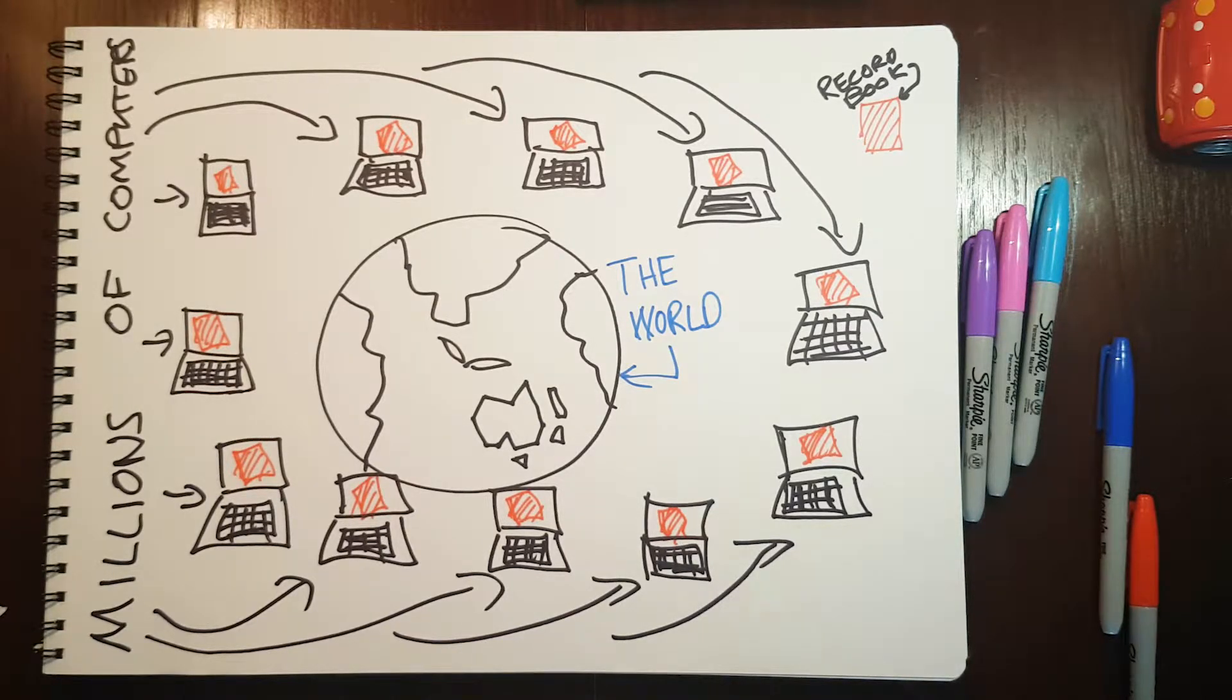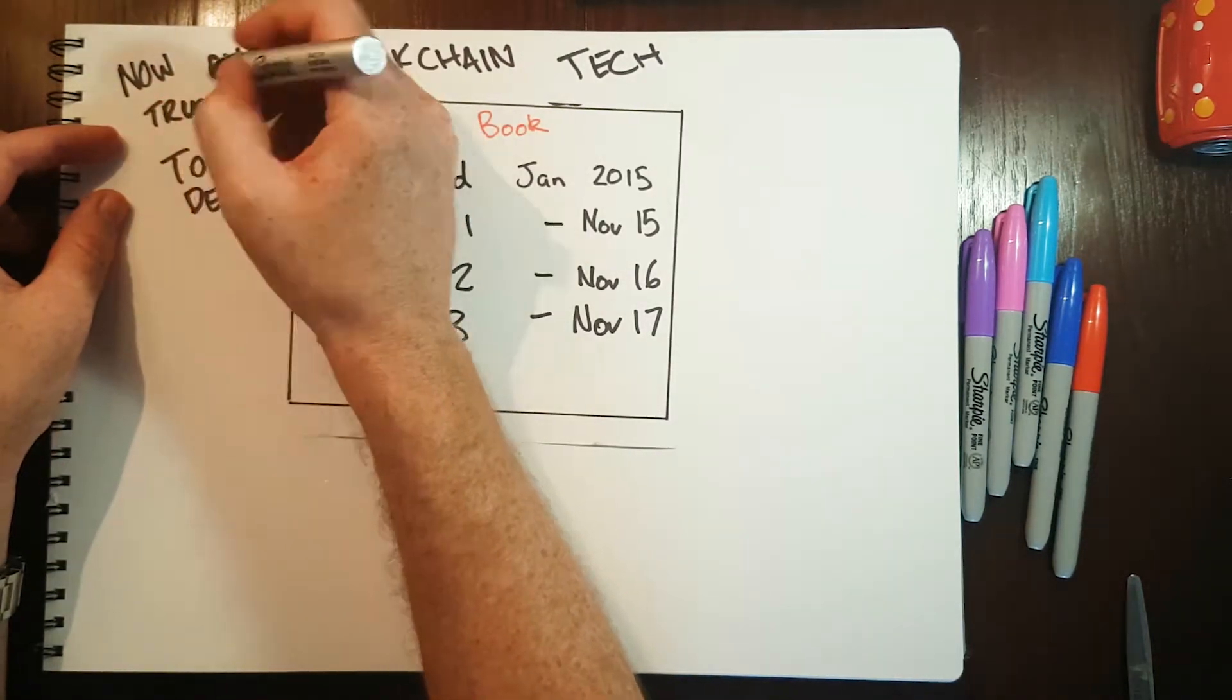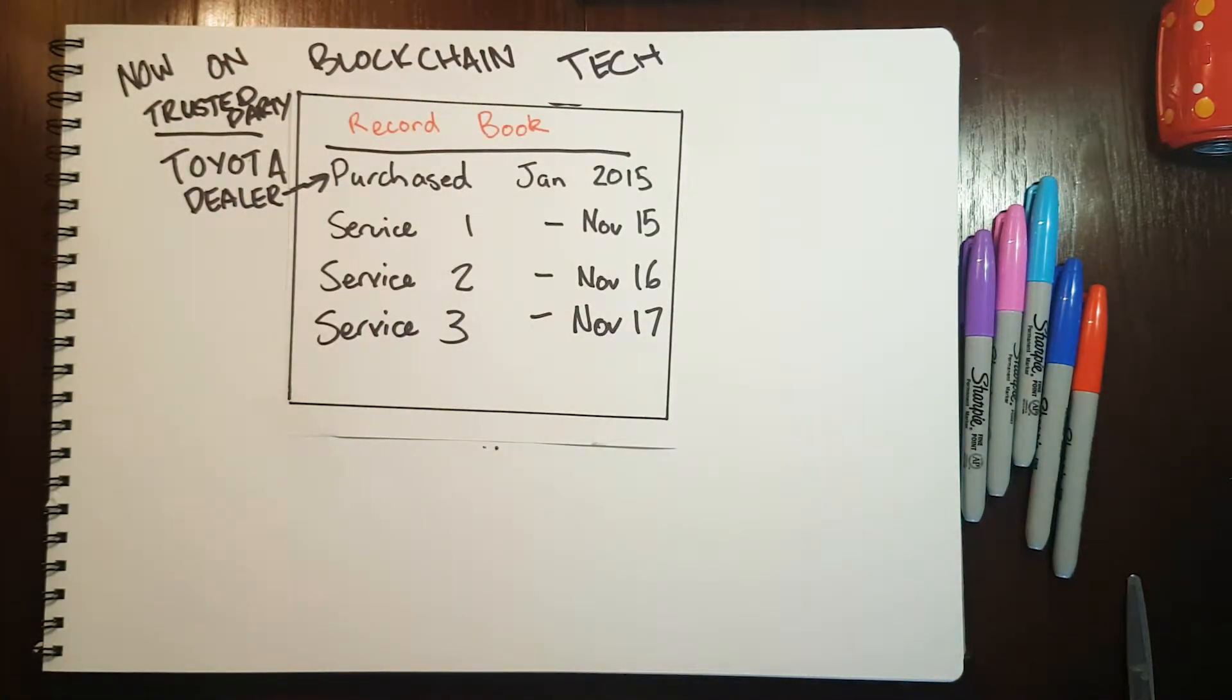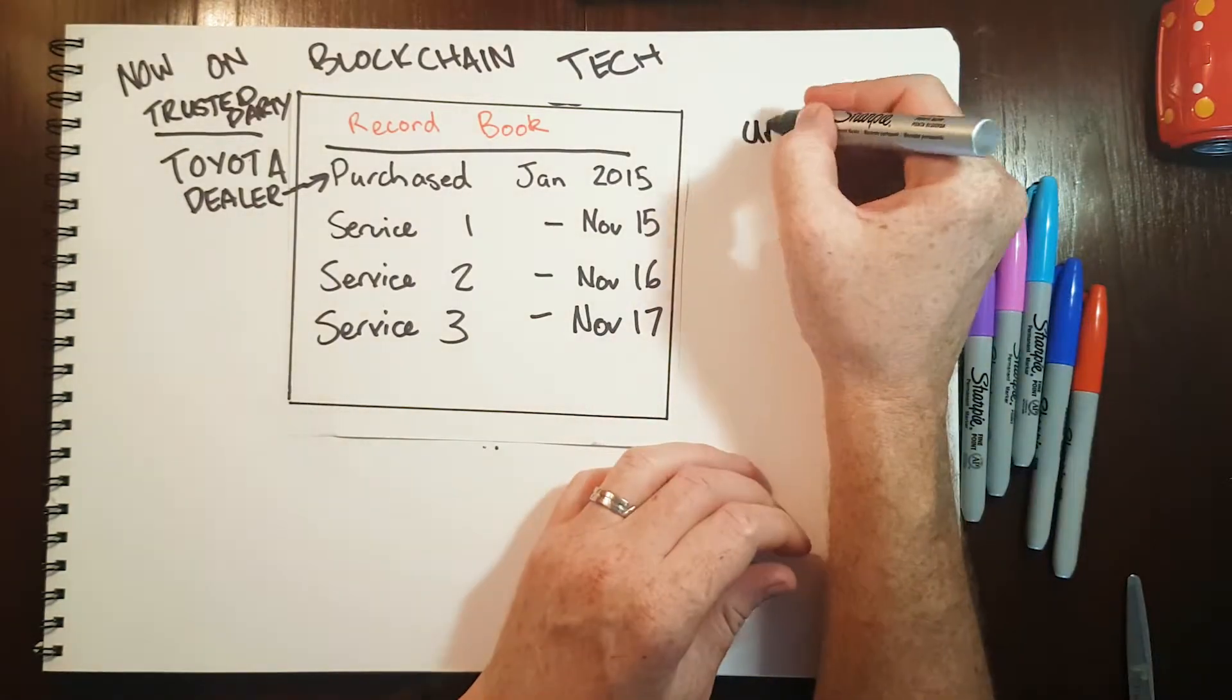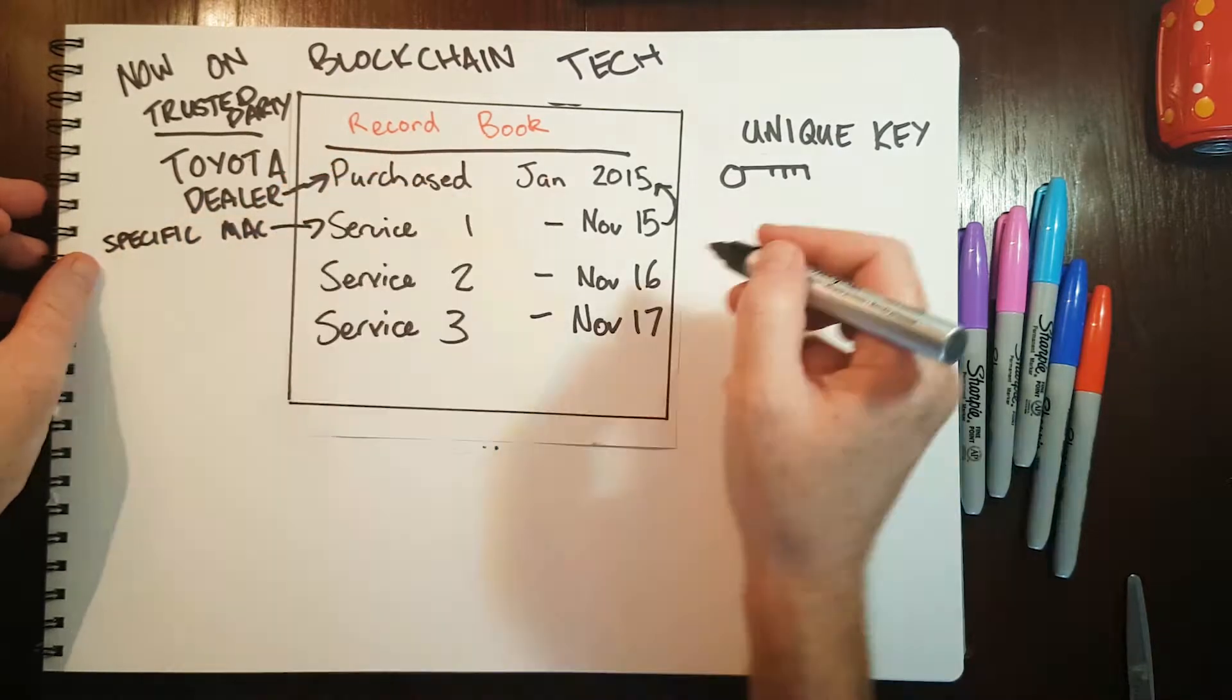Consider our secondhand car again. If the history of the car was stored on the blockchain you would have complete confidence in the data. Each record stored on the blockchain is stamped by the trusted third party that wrote that record and is secured with a unique key for that record.